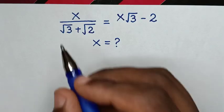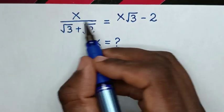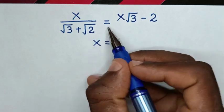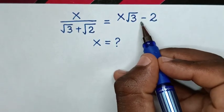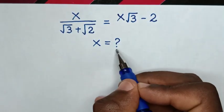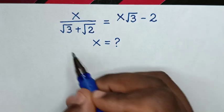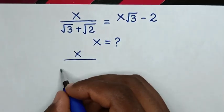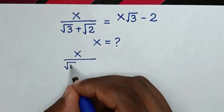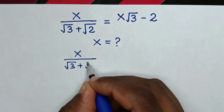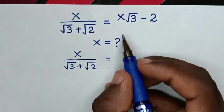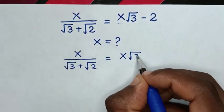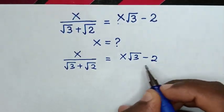Hello. How to solve x over square root of 3 plus square root of 2 is equal to x square root of 3 minus 2, to find the value of x. So from this equation, x over square root of 3 plus square root of 2 is equal to x square root of 3 minus 2.